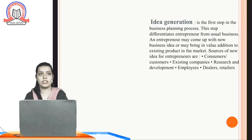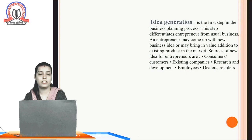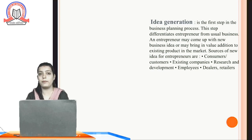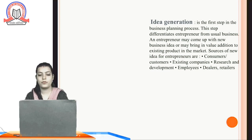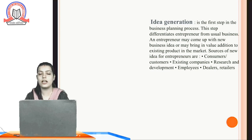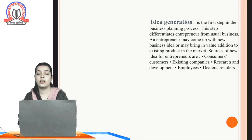Idea generation is the first step in the business planning process. This step differentiates the entrepreneur from a usual business. An entrepreneur may come up with new business ideas or may bring value addition to existing products in the market. Sources of new ideas include customers, existing companies, research and development, employees, dealers, and retailers — they may all generate ideas.